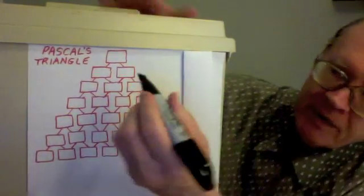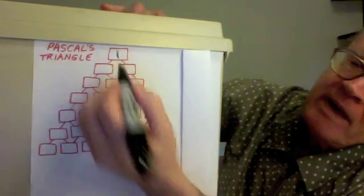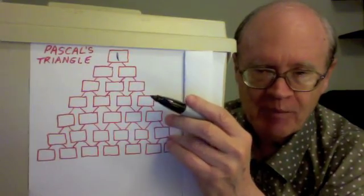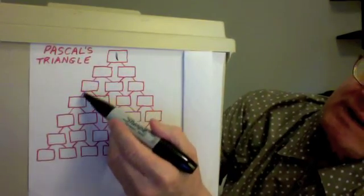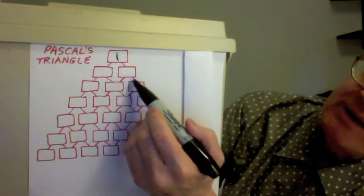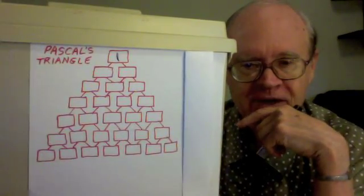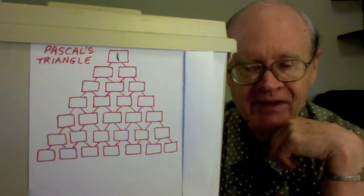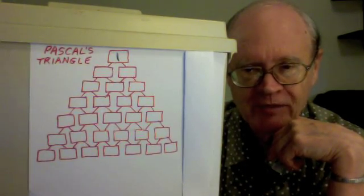I'm going to put a 1 in the top box. And now you see these little paths from one box to another, some of the paths moving to the left, others moving to the right. The plan is to fill each box with the number of ways to get to that box following those paths downward from the top.